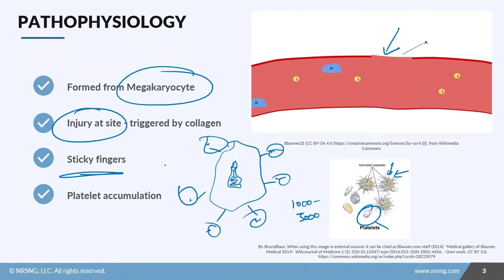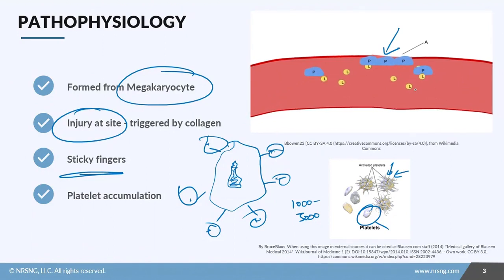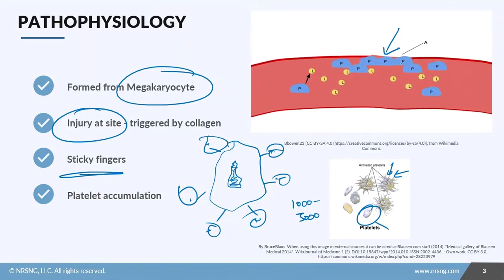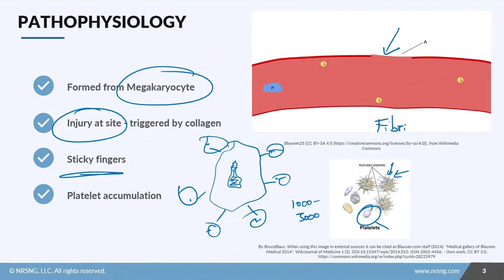The entire clotting cascade is very complicated, and there are a lot of factors that play into it. What you need to know is that platelets arrive at the site and stick to the injury, which triggers more of this response. In the animation, you can see platelets come and trigger more platelets, and they all clump together to form a clot. The platelets also interact with a substance called fibrin, which creates a clot at the site and actually stops the bleeding.